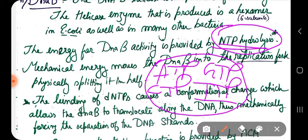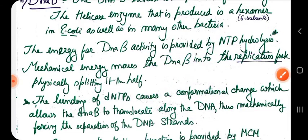NTP hydrolysis is required for DnaB function because it is moving along the replication bubble, breaking hydrogen bonds between the strands, and energy is needed for this — provided by ATP, GTP, or in most cases written as ATP or GTP.